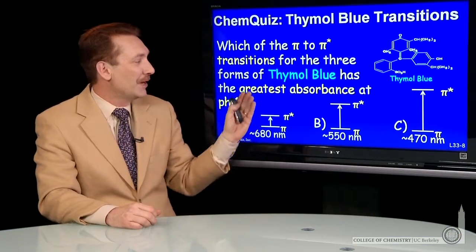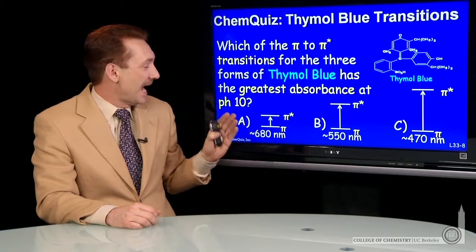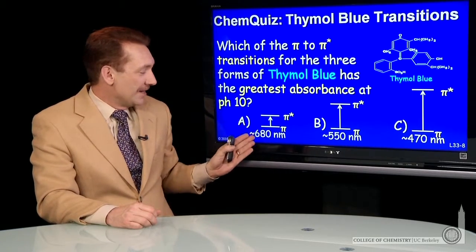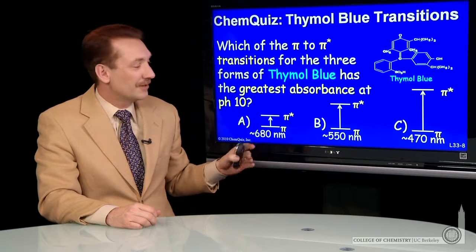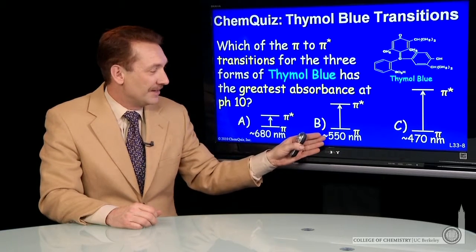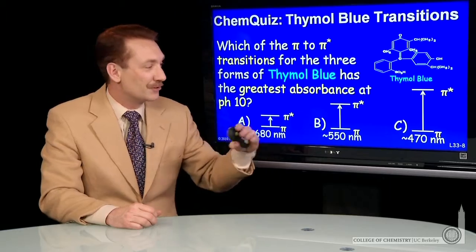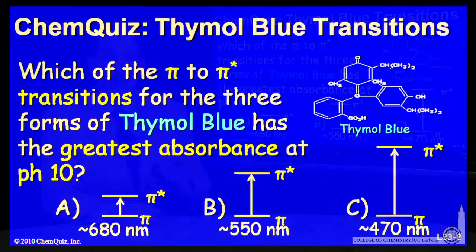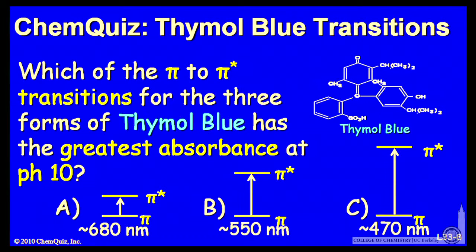Which of these transitions in thymol blue has the greatest absorbance at pH 10? Is it A, the 680 nanometer absorbance; B, the 550 nanometer absorbance; or C, the 470 nanometer absorbance? Think about that and make a selection.